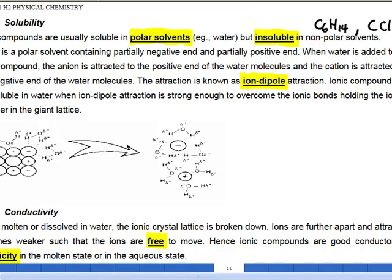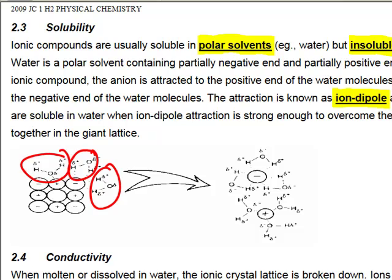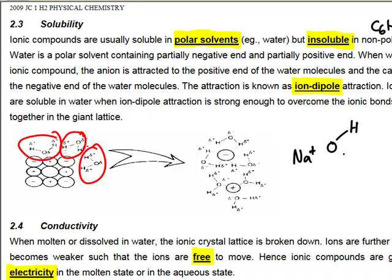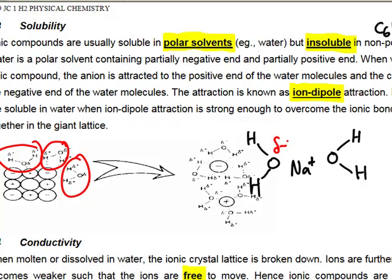Let's look at why an ionic compound will be soluble in water. When a water molecule approaches the ionic lattice, with oxygen very near to your sodium plus — it makes sense because in the water molecule, the bonds are polarized such that oxygen, being more electronegative, carries a delta negative charge. So you have forces of attraction between sodium plus, which is positively charged, and oxygen, which has a slight negative charge. We call this ion-dipole interaction.